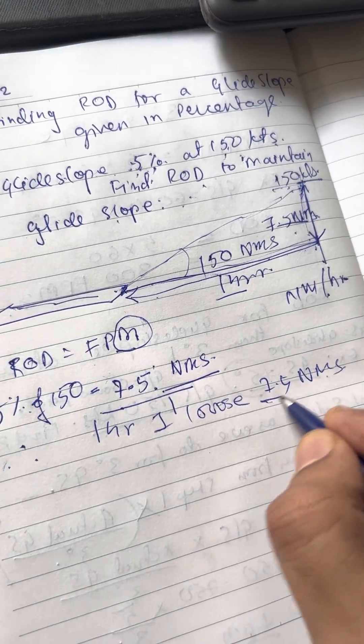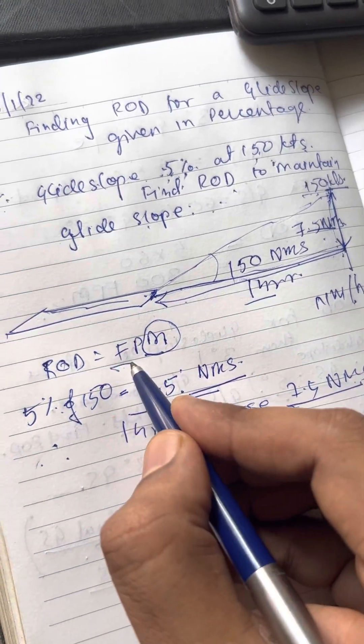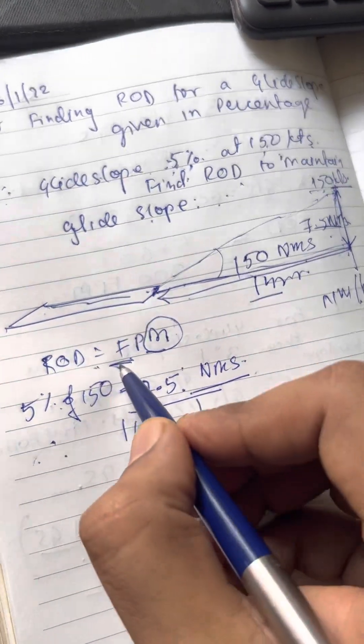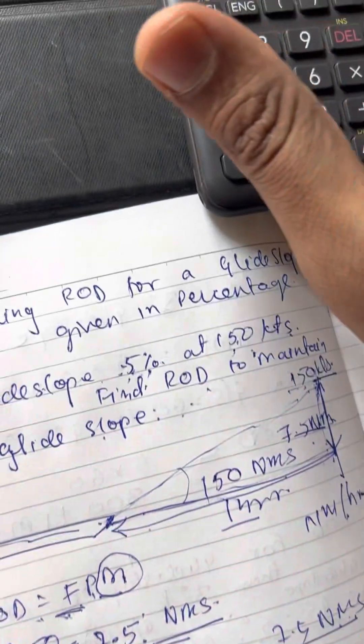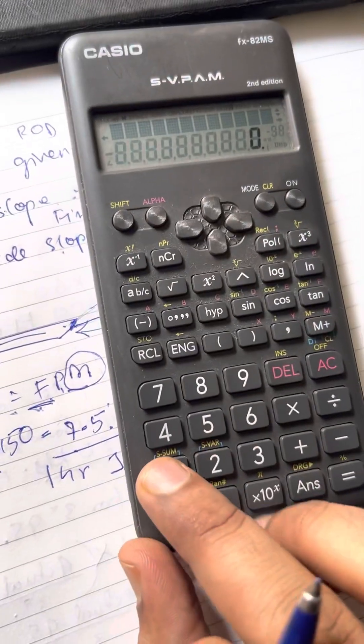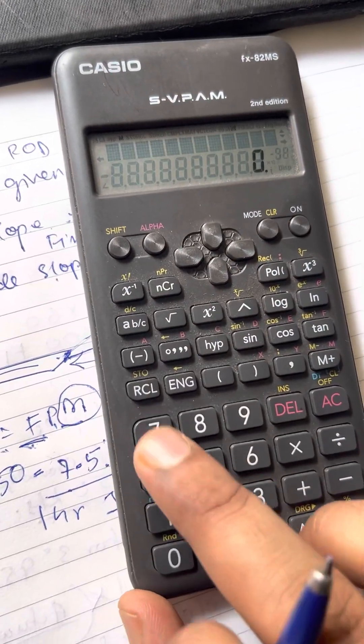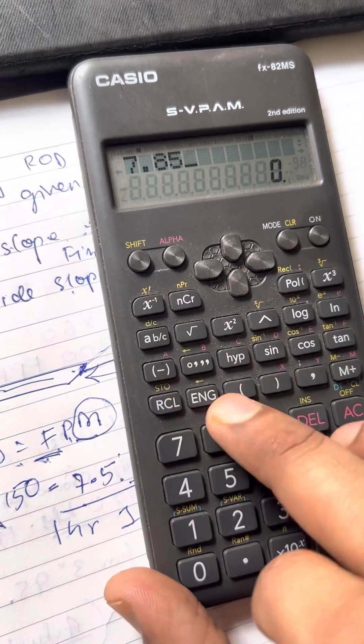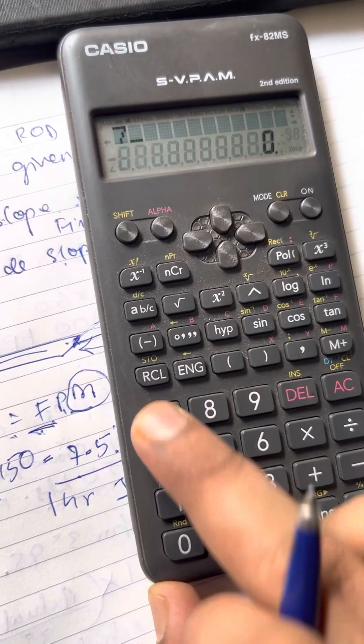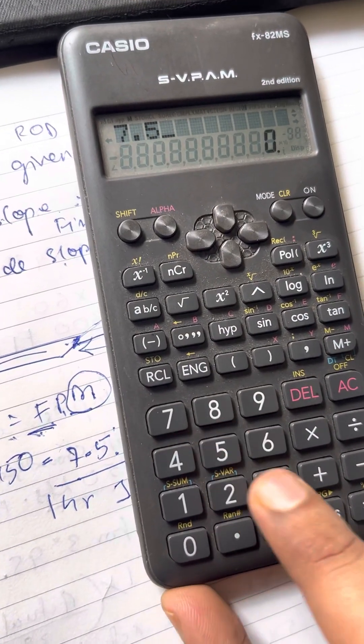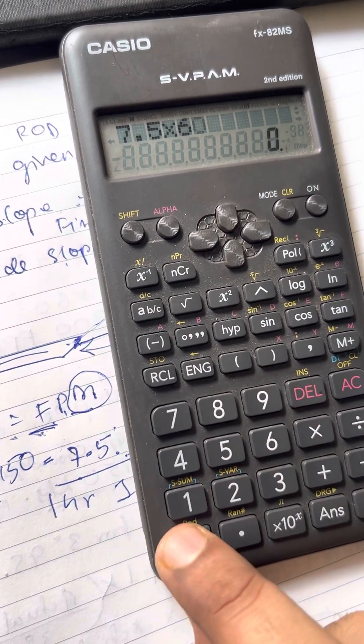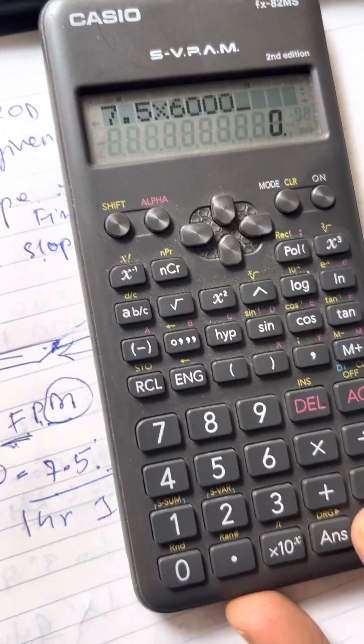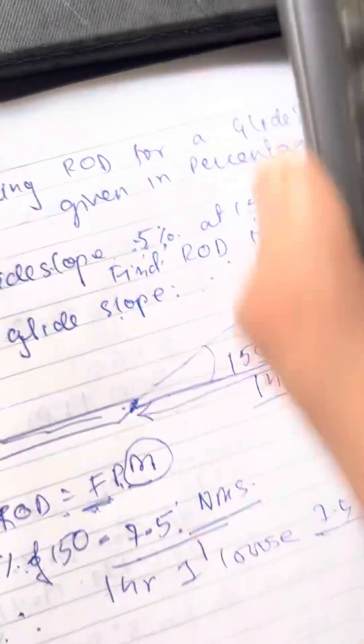So first let's convert nautical miles into feet per minute. First into feet, this is for hour. So first we'll convert 7.5 nautical miles into feet. How do we do that? We take approximate conversion, one nautical mile is 6000 feet. So 7.5, 7.5 into 6000.